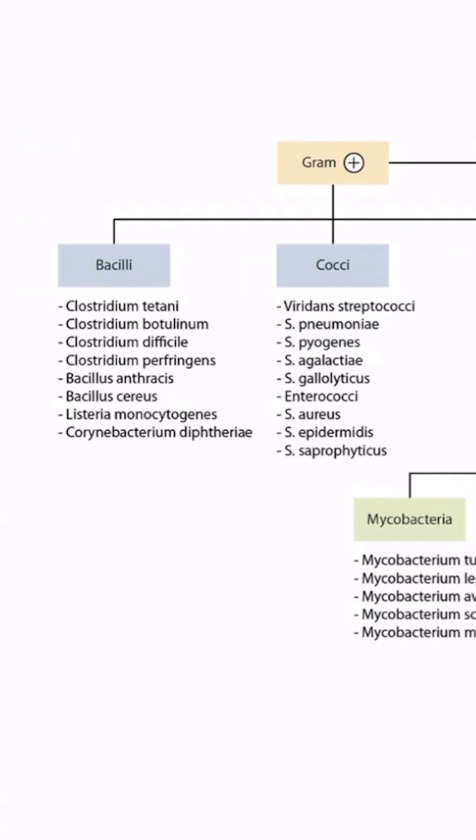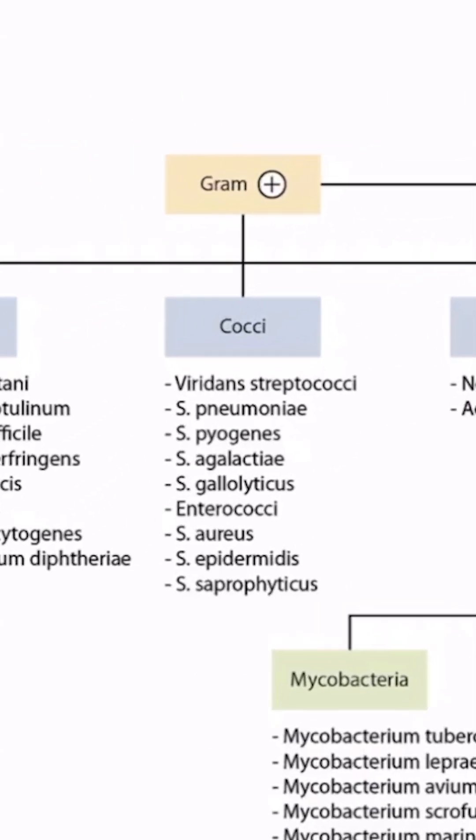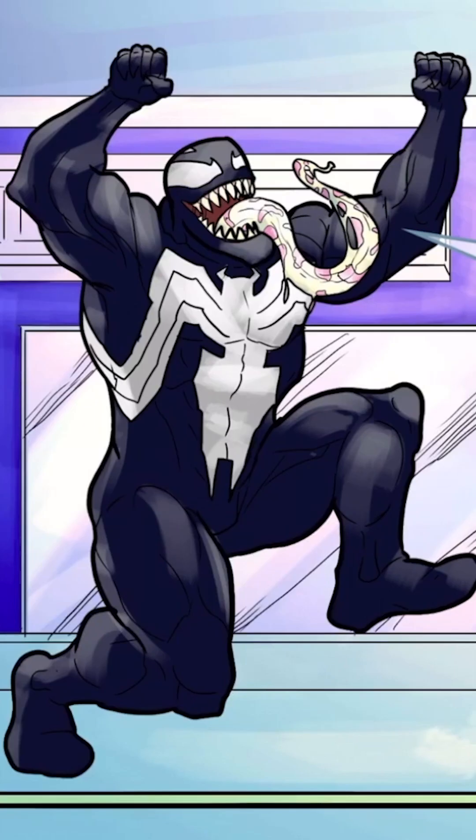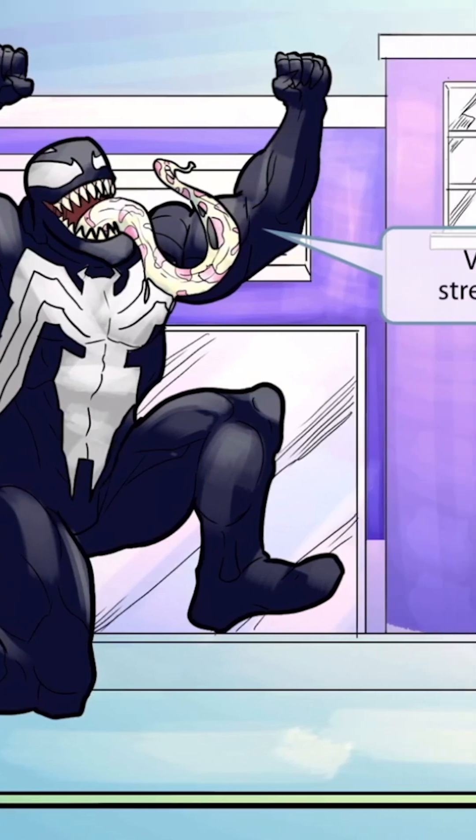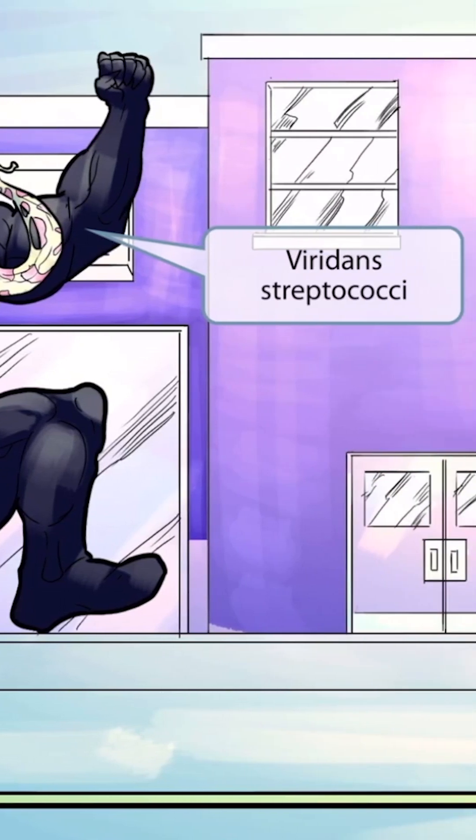This is our bacteria overview figure. In this video, we'll be discussing Viridans streptococci, which you can see right here. This scene will be an epic comic book style fight between our venomous villain and a spider warrior. The venomous villain here represents Viridans streptococci, so venomous for Viridans.